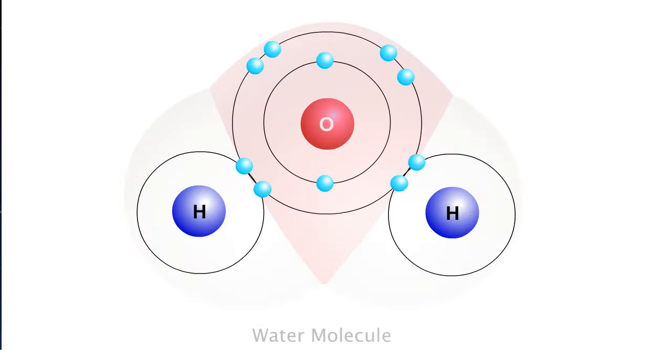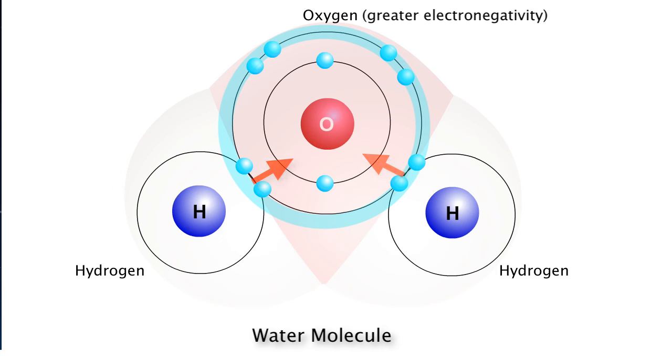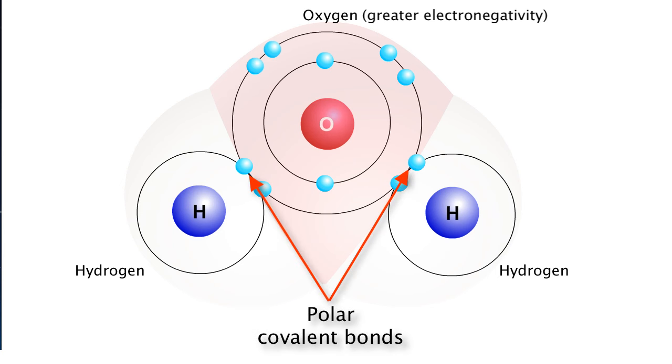Because of this, when oxygen and hydrogen are bonded together, as shown in this water molecule, oxygen pulls at the electrons more than hydrogen does. This causes the covalent bond between the oxygen and hydrogen atoms to become polar.